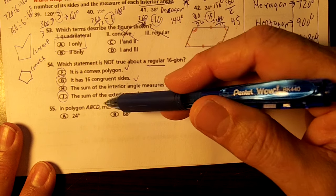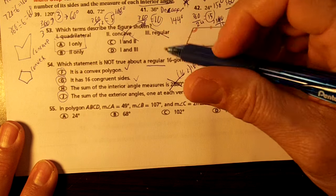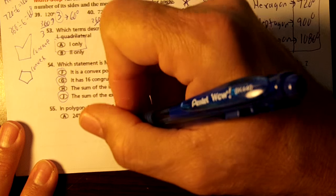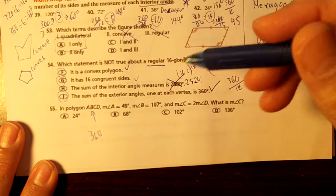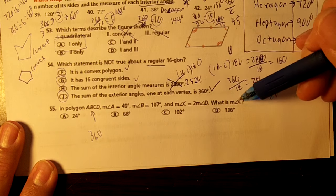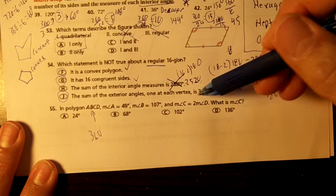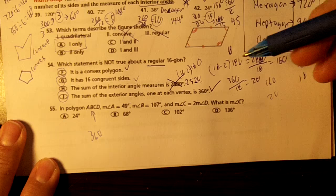Okay, and lastly, in polygon ABCD—okay, this is a quadrilateral, so it's going to have 360 degrees. What is the measure of angle C? So you just add these up and take away from 180.